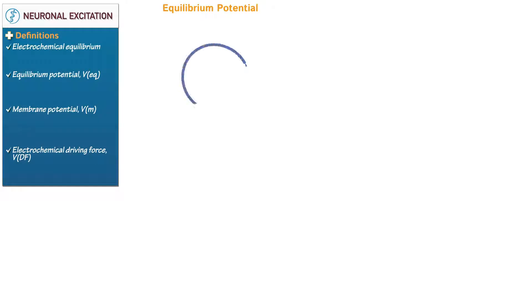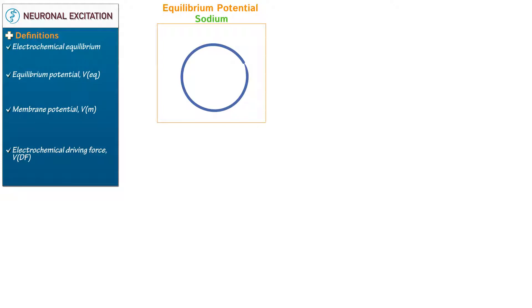Draw a cell membrane. Throughout this tutorial, we'll address the membrane potentials for sodium, potassium, chloride, and calcium. Begin with sodium. Show that there's a far greater concentration of sodium ions outside of the cell than inside — a ratio of roughly 15 to 1.